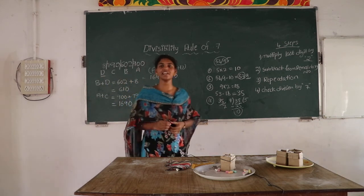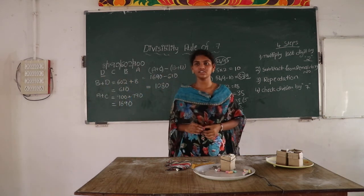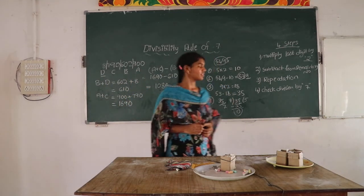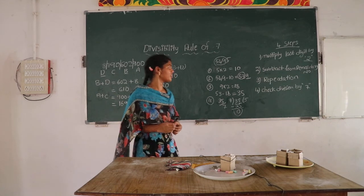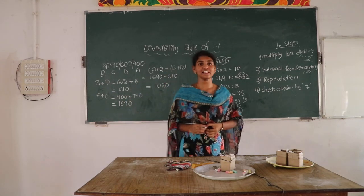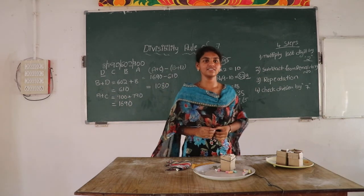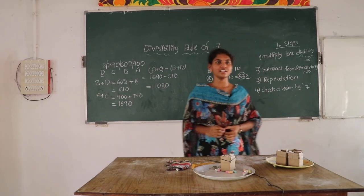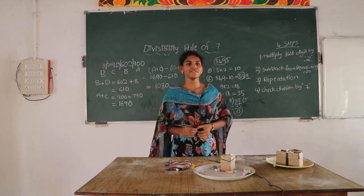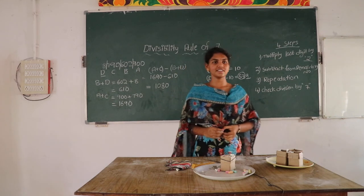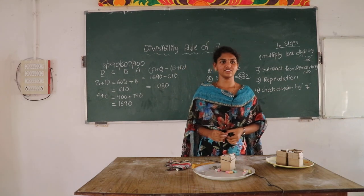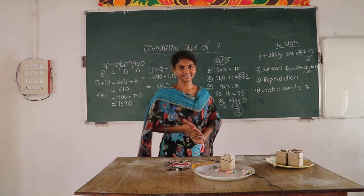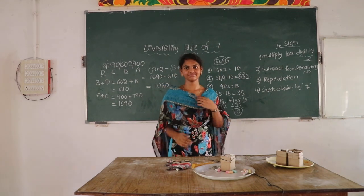Is it clear to all? Yes. Up to now, what did we learn today? Divisibility rule of 7. Okay. Thank you.